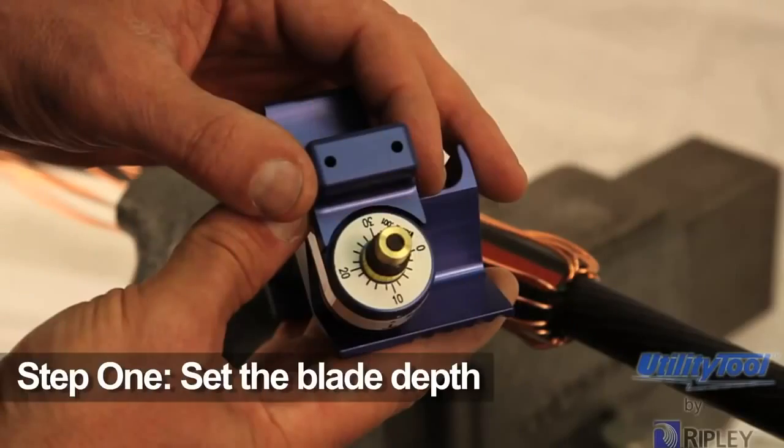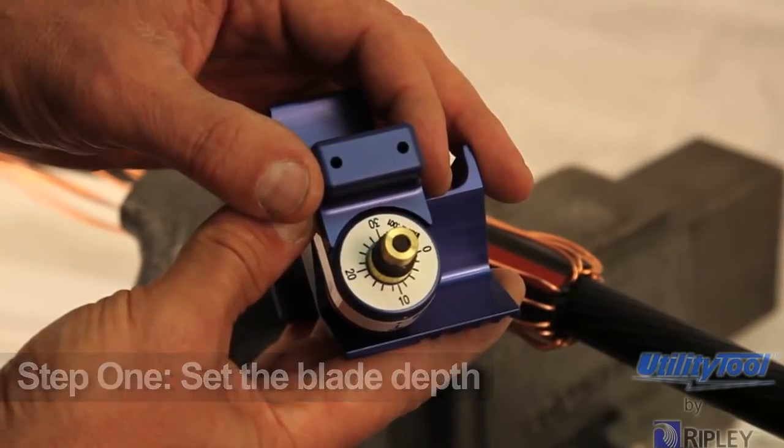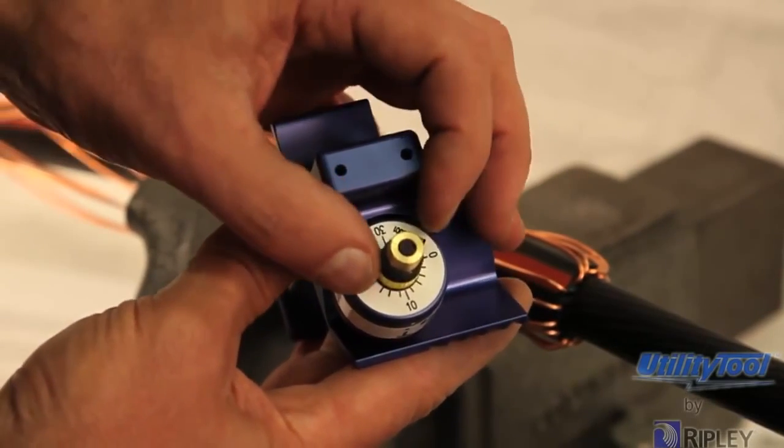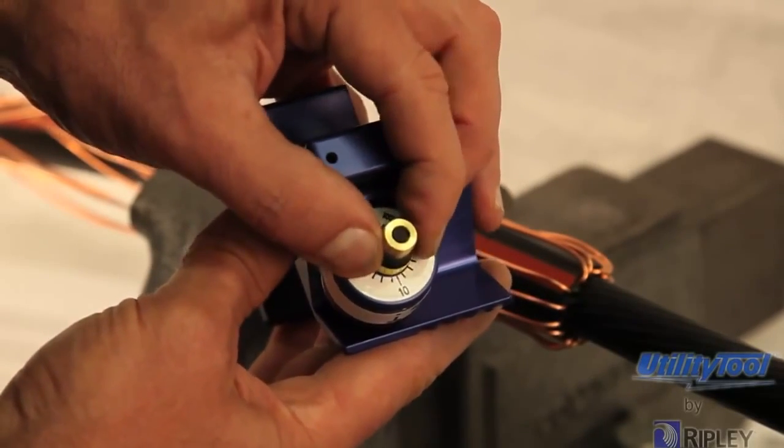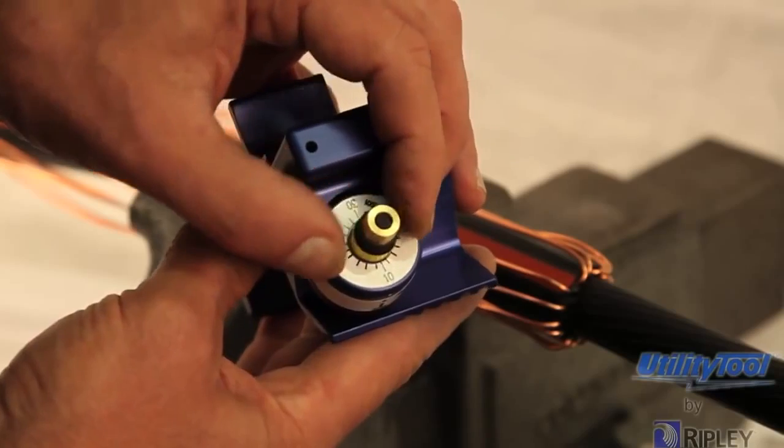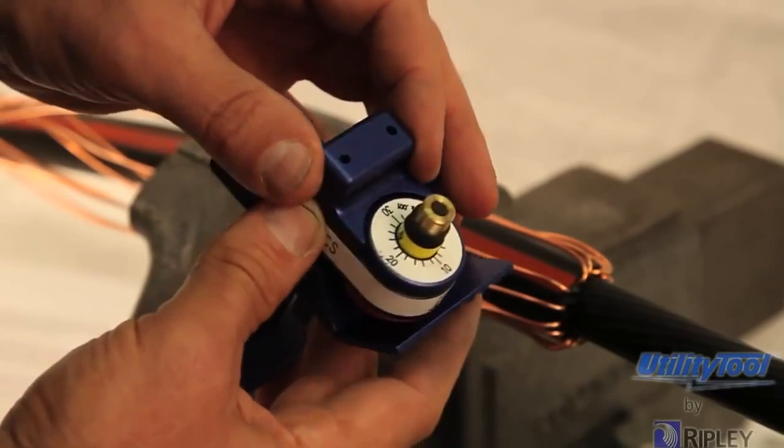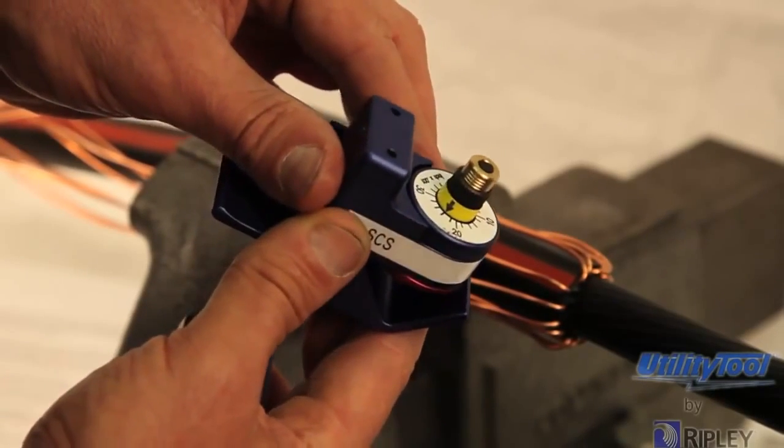Step 1. To begin using the SCS, set the blade to a depth equal to 75 to 90 percent of the thickness of the Semicon screen. To do this, rotate the blade adjustment knob clockwise until the arrow aligns with the desired blade depth. Always ensure that the blade depth is not more than the Semicon thickness.